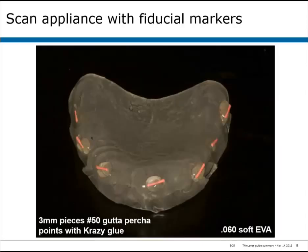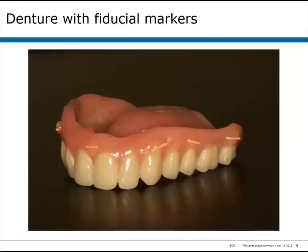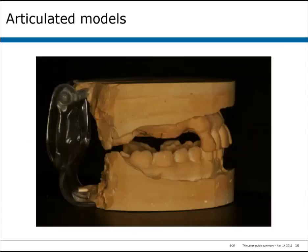For edentulous cases, an appliance can be made in much the same fashion. If the denture fits reasonably well, we can do the dual scan method whereby the fiducial markers are placed on the denture itself with triad or with the adhesive glass bead markers.